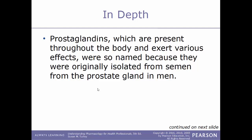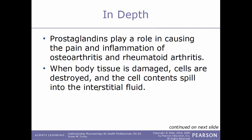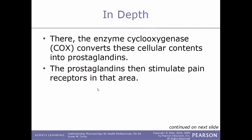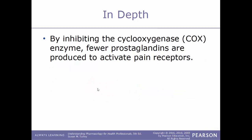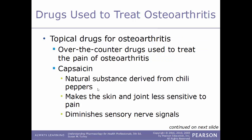Prostaglandins are present throughout the body and exert various effects; they were originally isolated from semen of the prostate gland. They play a role in causing the pain and inflammation of osteoarthritis and rheumatoid arthritis. When body tissue is damaged, cells are destroyed and their contents spill into the interstitial fluid. The enzyme cyclooxygenase (COX) then converts these cellular contents into prostaglandins, which stimulate pain receptors in that area. The greater the tissue damage, the more prostaglandins are produced and the greater the pain sensation. By inhibiting the COX enzyme, fewer prostaglandins are produced and fewer pain receptors are activated.